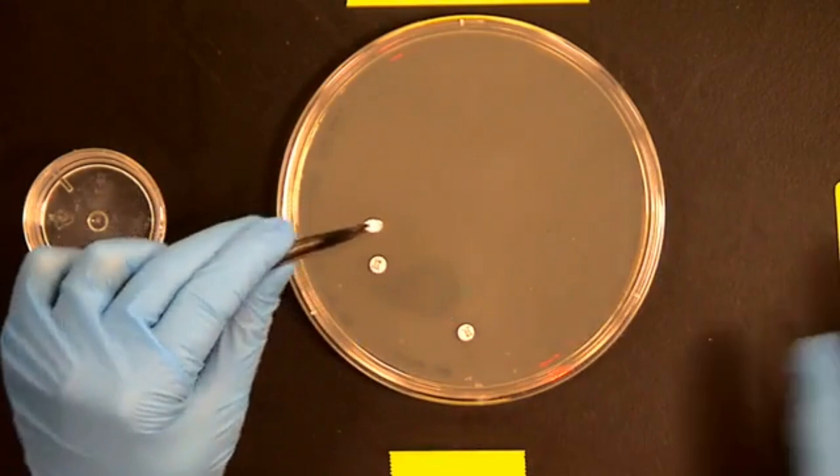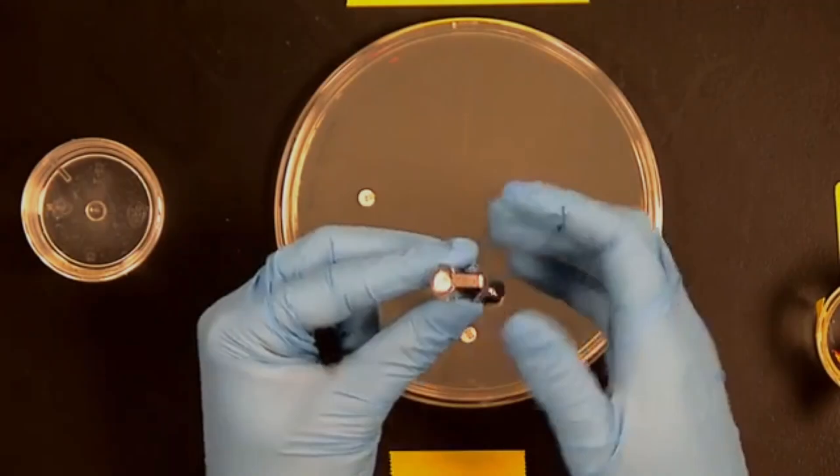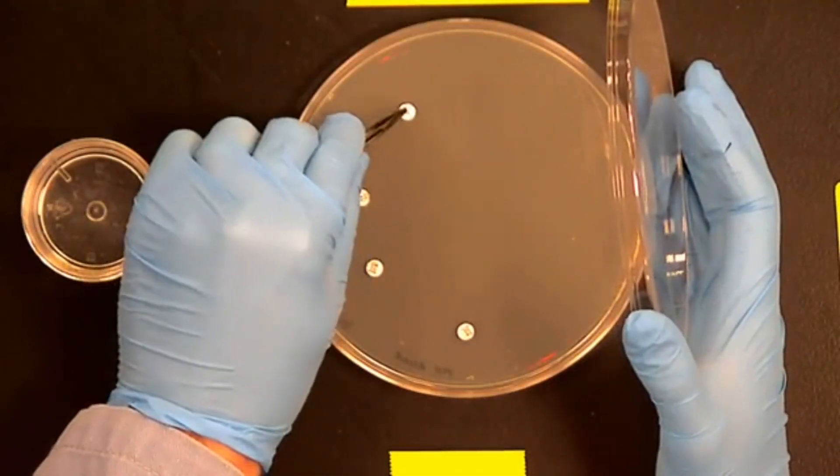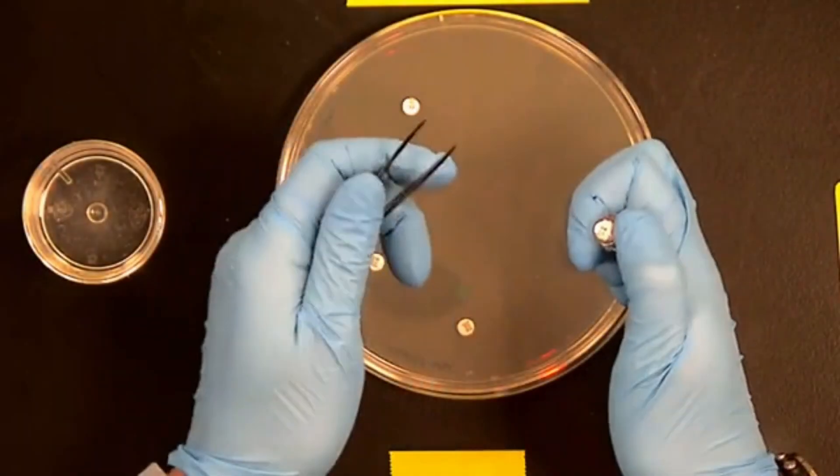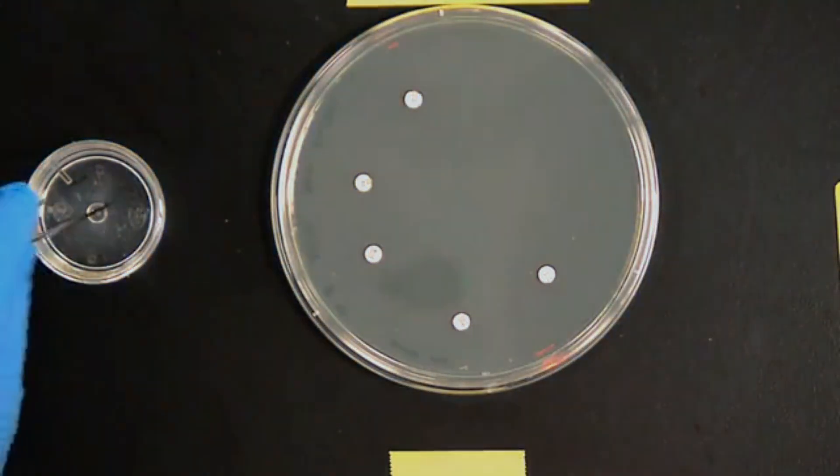When adding discs, just make sure to disinfect your forceps between each disc, and then place each of the remaining discs spaced out so that there's adequate room to evaluate zones of inhibition that we're going to be looking at after the plate incubates.